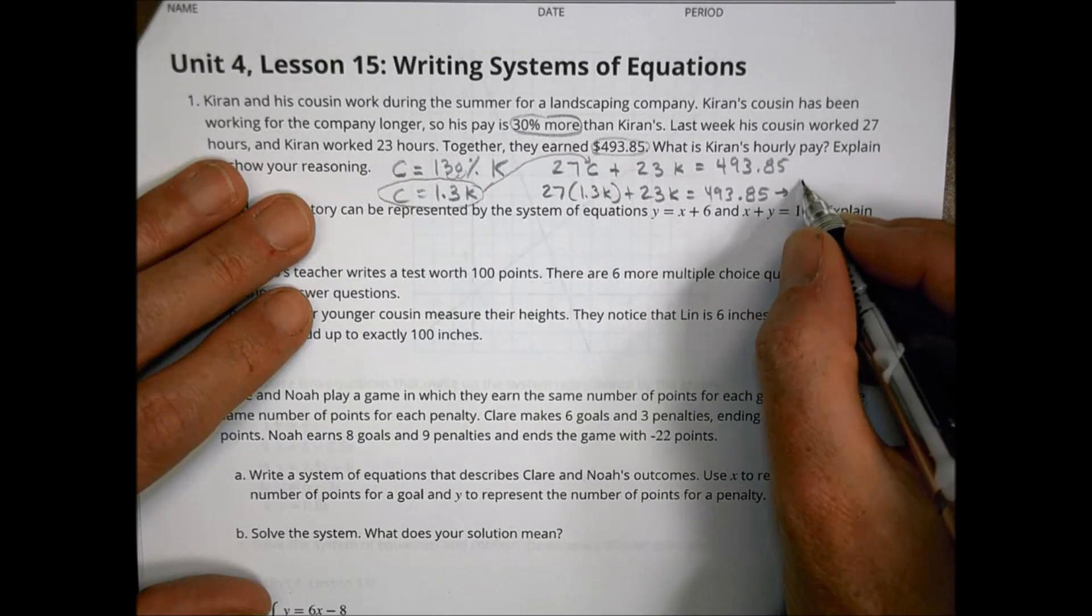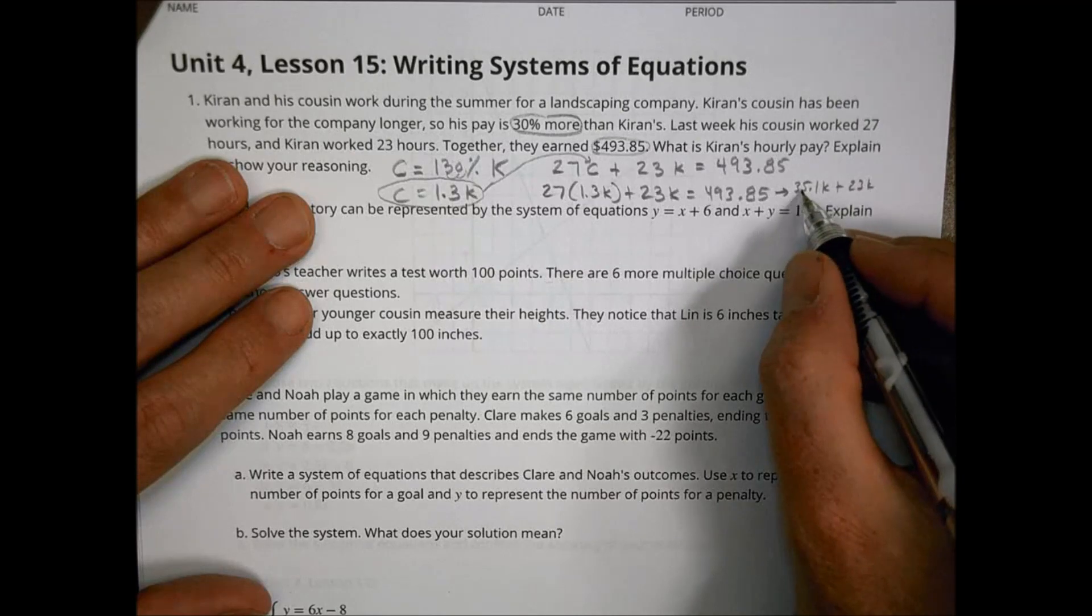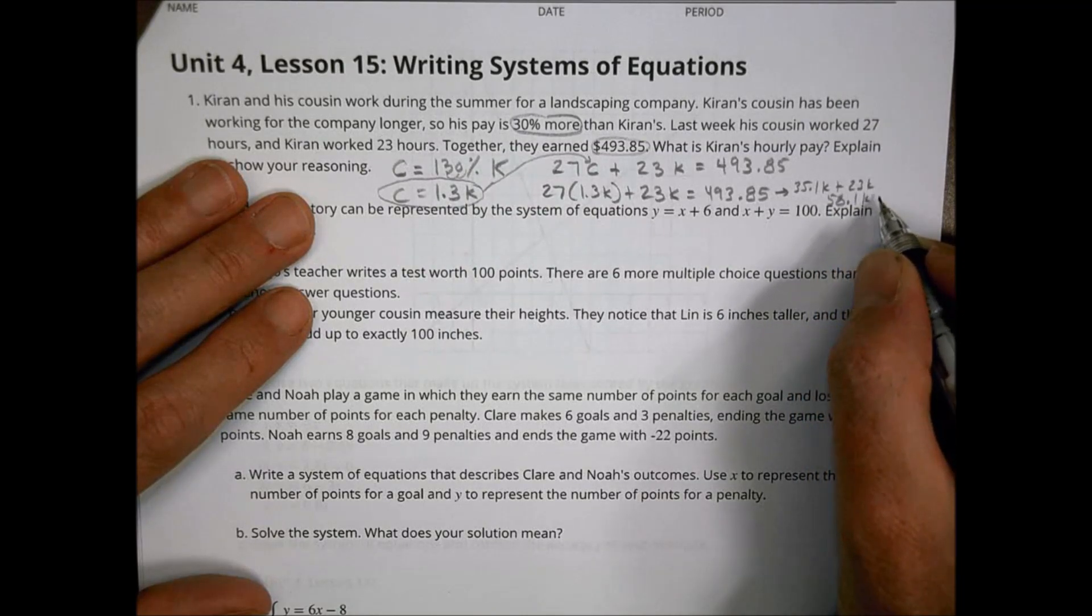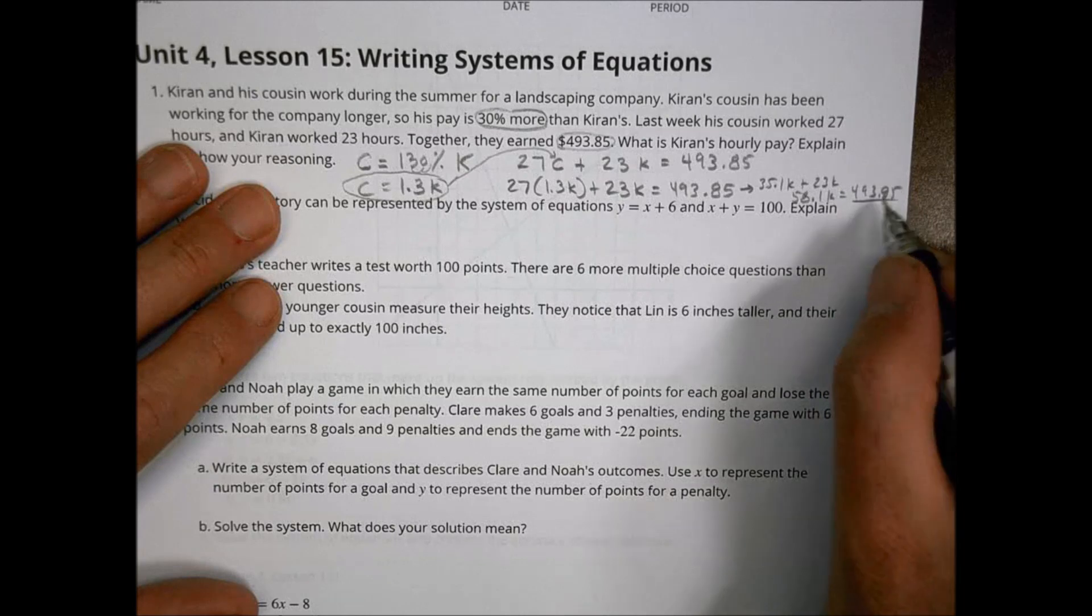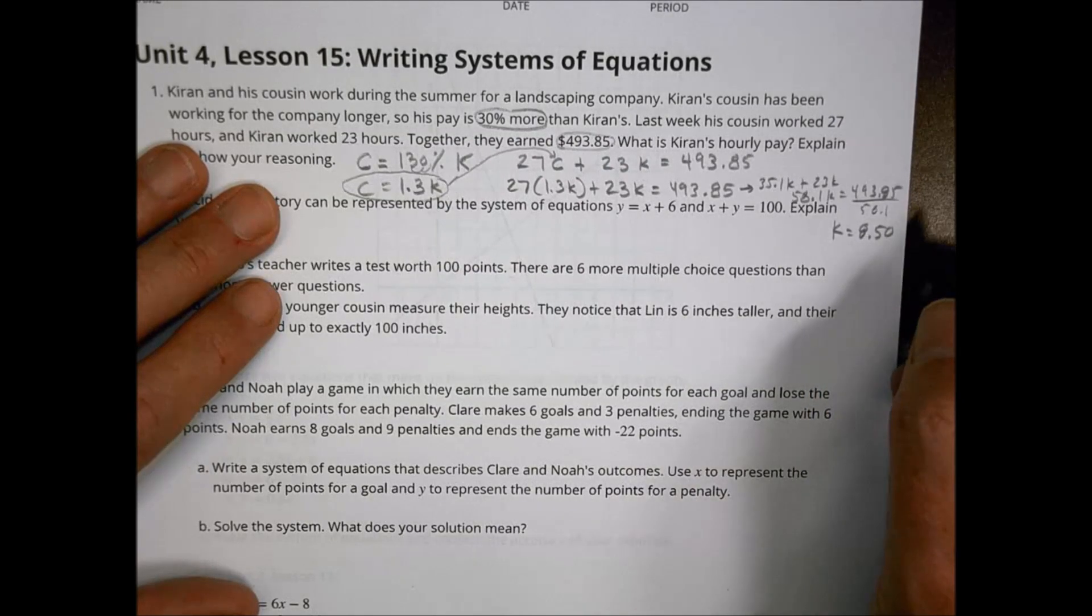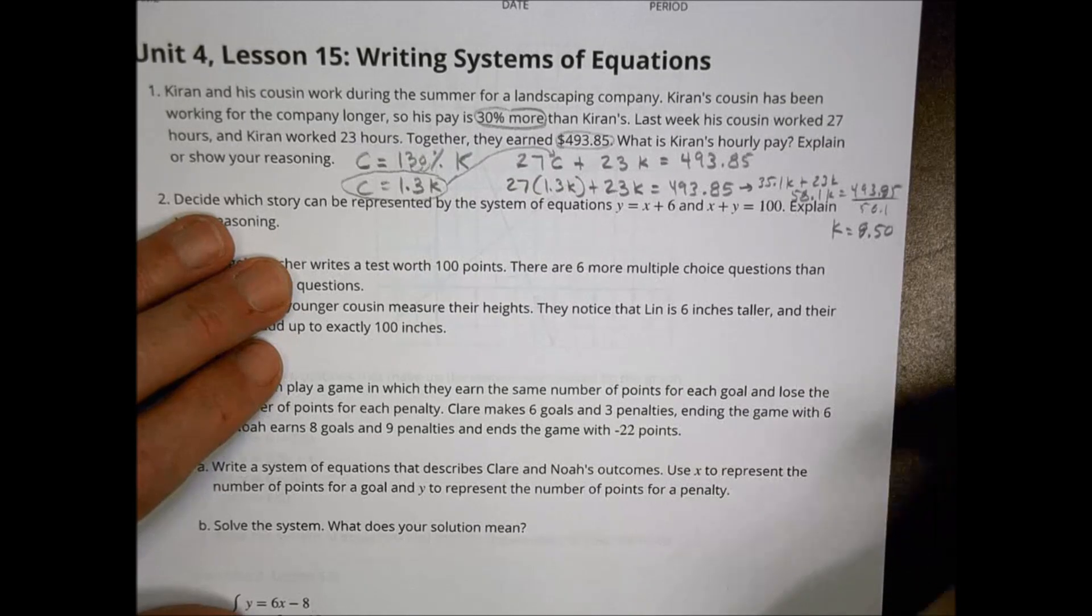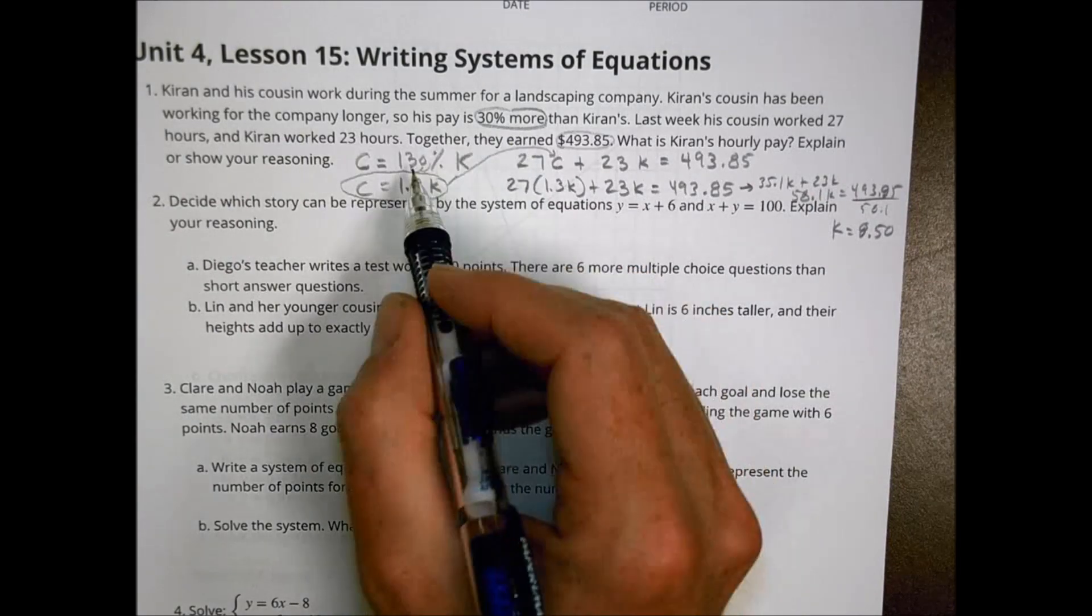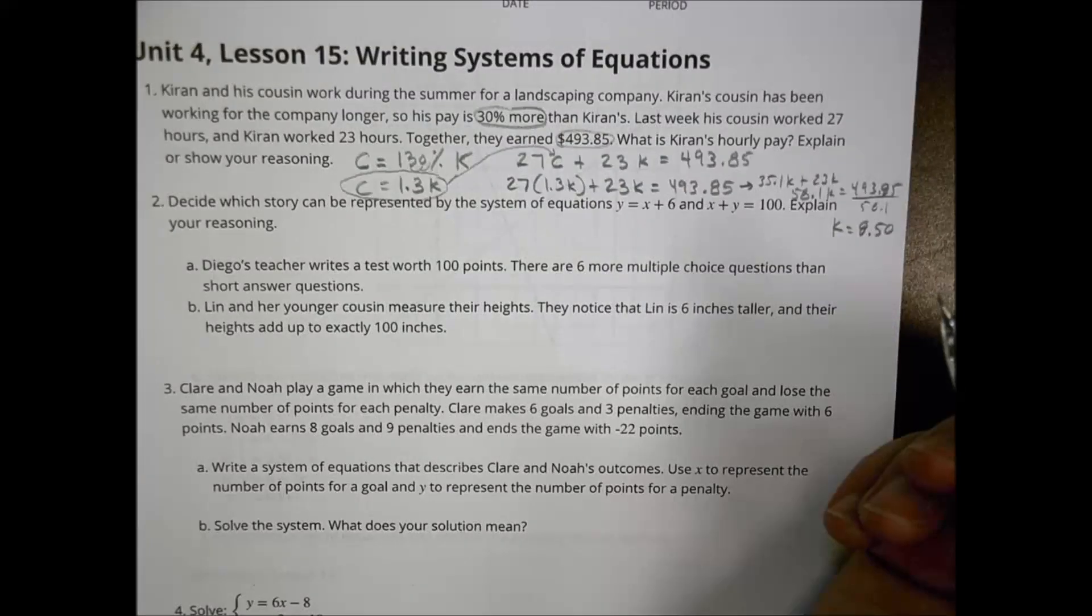When I multiply this out, 27 times 1.3 is going to be equal to 35.1. So this becomes 35.1 K plus the 23 K, which is now going to be equal to 58.1 K. And that equals our 493.85. So to find the value of K, I divide that by 58.1 and K is going to equal $8.50. So Kieran's pay in this case here is $8.50. So you had to take some piece of information and use what you learned in previous units. 30% more, make that into 130% of Kieran, turn that into a decimal, and then substitute that into our equation to solve for K.